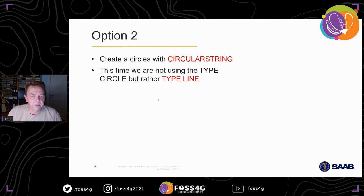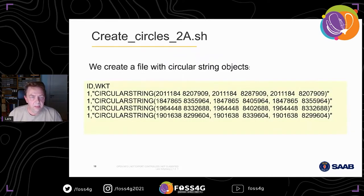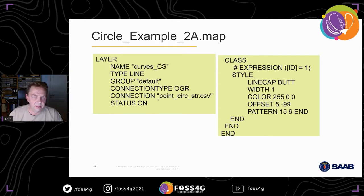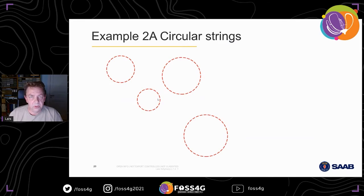There are other options: I think it was Seth Girvin that showed this a couple of years ago — that you could do circular strings, and then you're not using the type circle but type line. So I created a script that did circular strings. That's actually a CSV connected with OGR — it's a CSV reader within OGR that reads these curves — and that works well as well.